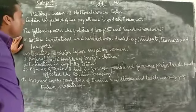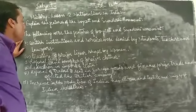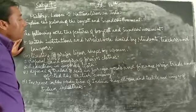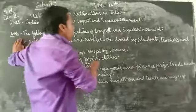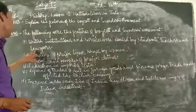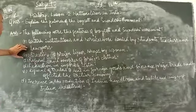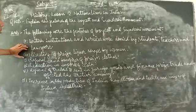British institutions and services were denied. Students, teachers, and lawyers boycotted British schools and courts.